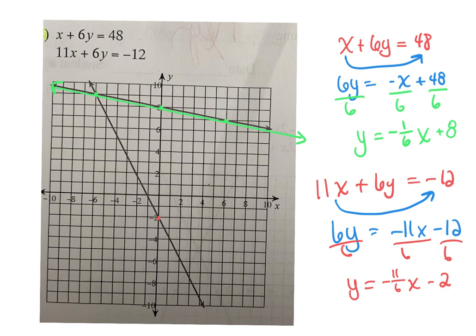So in this case, I would go up 11 and right 6. When you do that, you're actually going to be right on that line. Up 11 and left 6 is the same thing as down and right, so one negative movement is all you need here. Oftentimes, if you graph your first line, you're going to choose how you do that slope based on where you're going to that second line, because it's going to help you get to that line. So your answer here should have been negative 6, 9 — that is your answer.